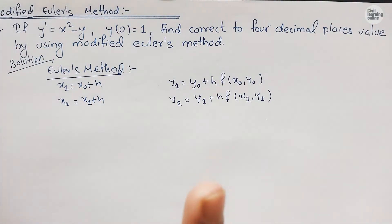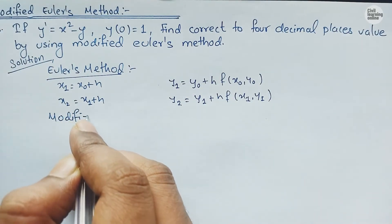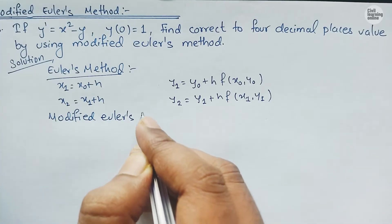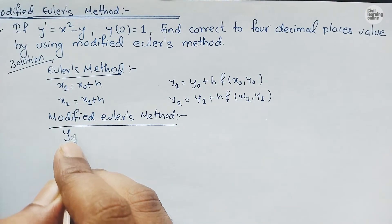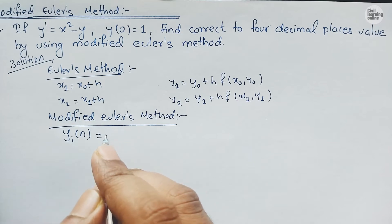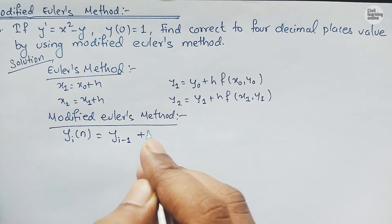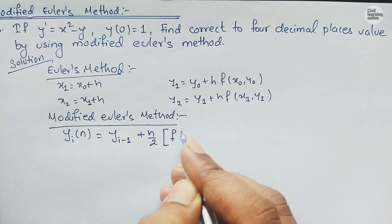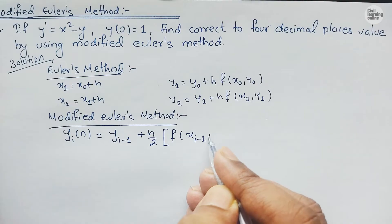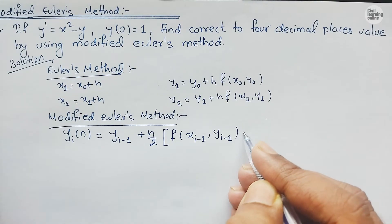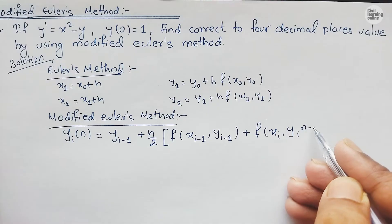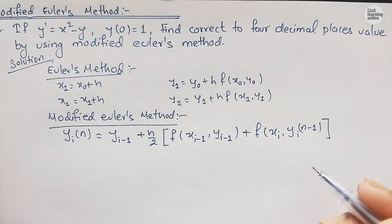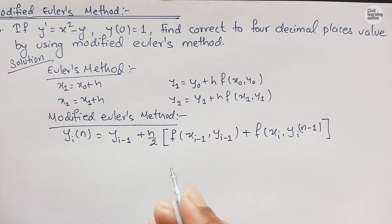Now the formula for Modified Euler's method: y_i^(n) = y_{i-1} + (h/2) · [f(x_{i-1}, y_{i-1}) + f(x_i, y_i^(n-1))]. This is the formula for Modified Euler's method, and it will become clearer once we start solving the numerical.